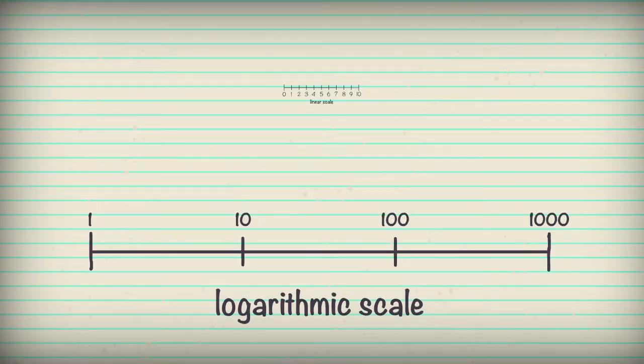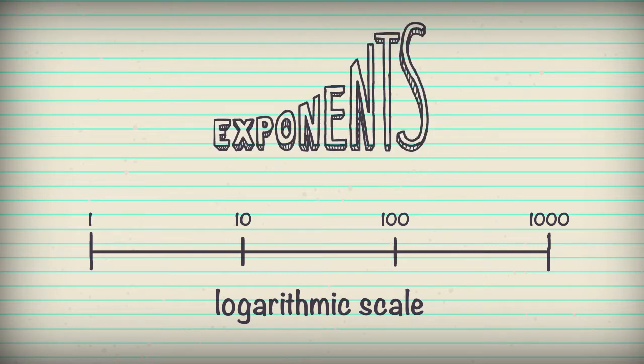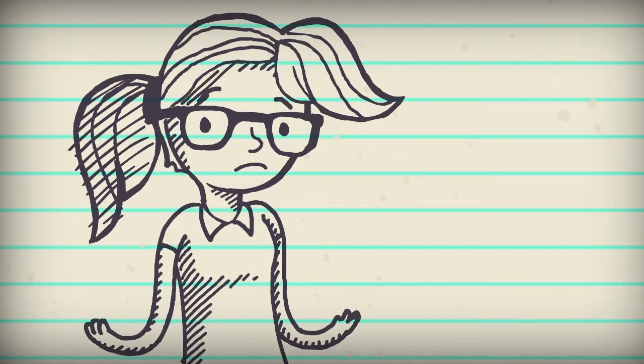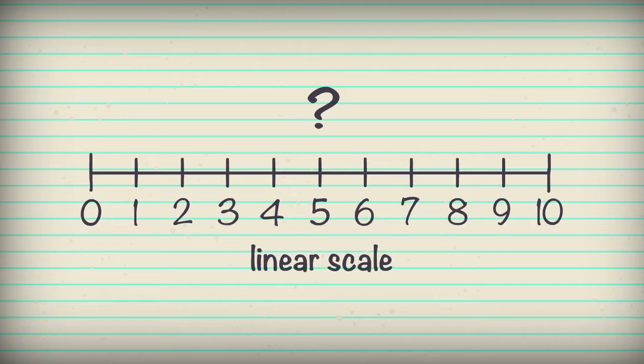And on a logarithmic scale, we use exponents. 10 to the power of 1 is 10, 10 times 10 is 100, 10 to the power of 3 is 1,000. But why should we use the log scale? Why not just use the linear scale to measure things?